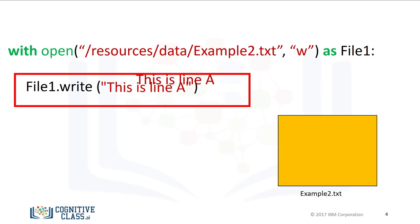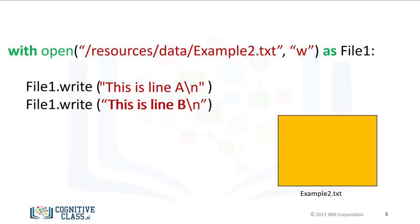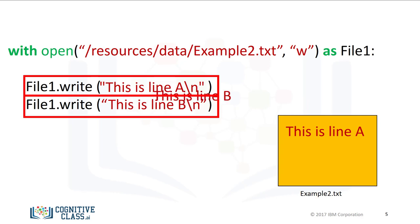We use the method write to write data into the file. The argument is the text we would like input into the file. If we use the write method successively, each time it's called, it will write to the file. The first time it is called, we will write, this is line A with a slash N to represent a new line. The second time we call the method, it will write, this is line B, then it will close the file.